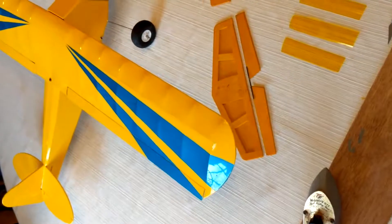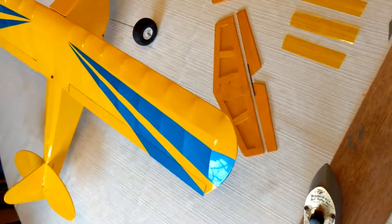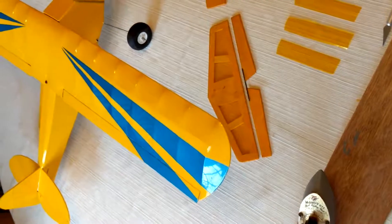I'm going to show you how to make an X hinge out of the same iron-on covering material that you use to cover the model.